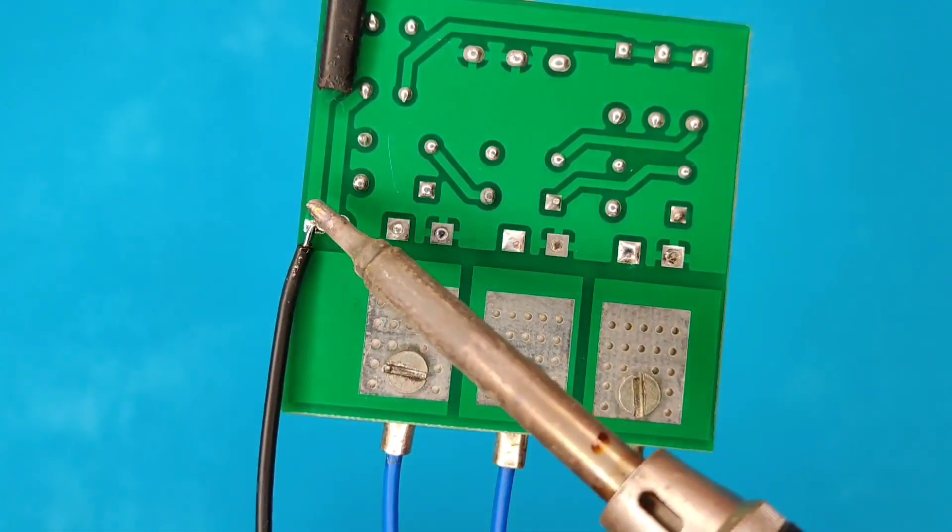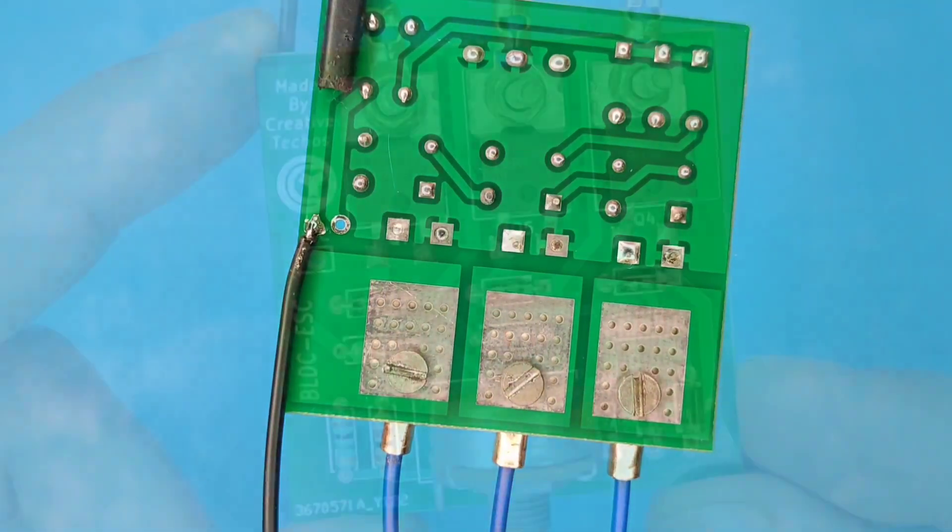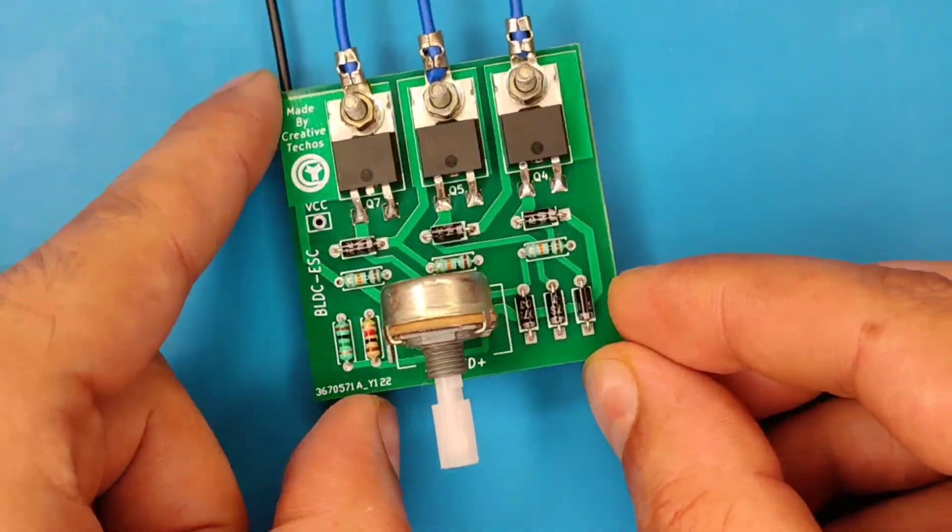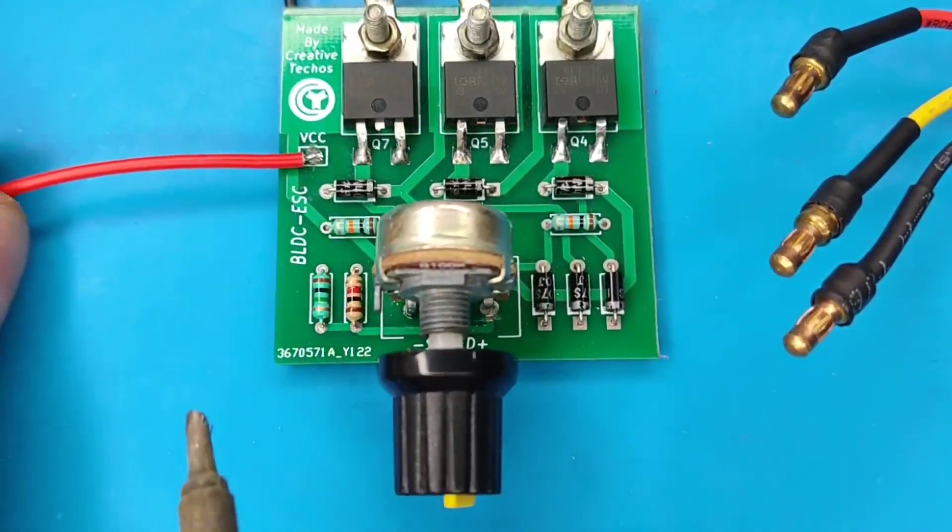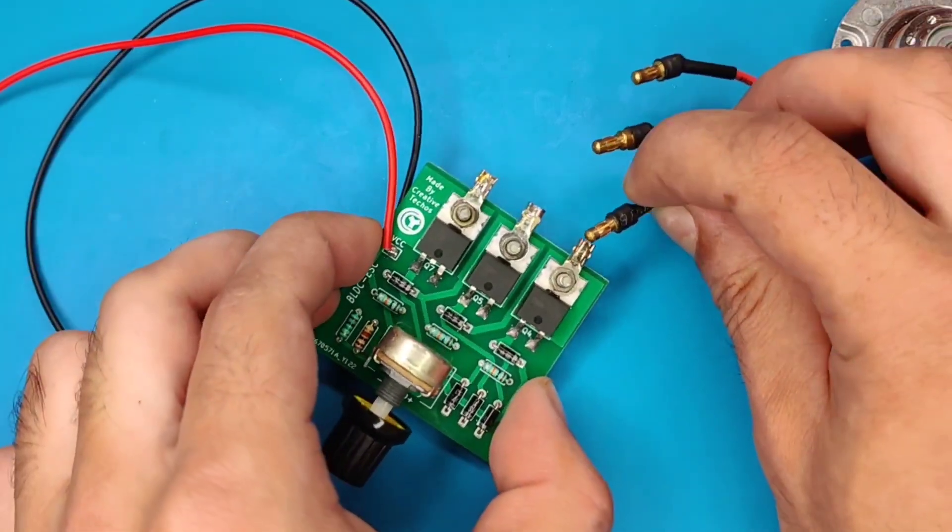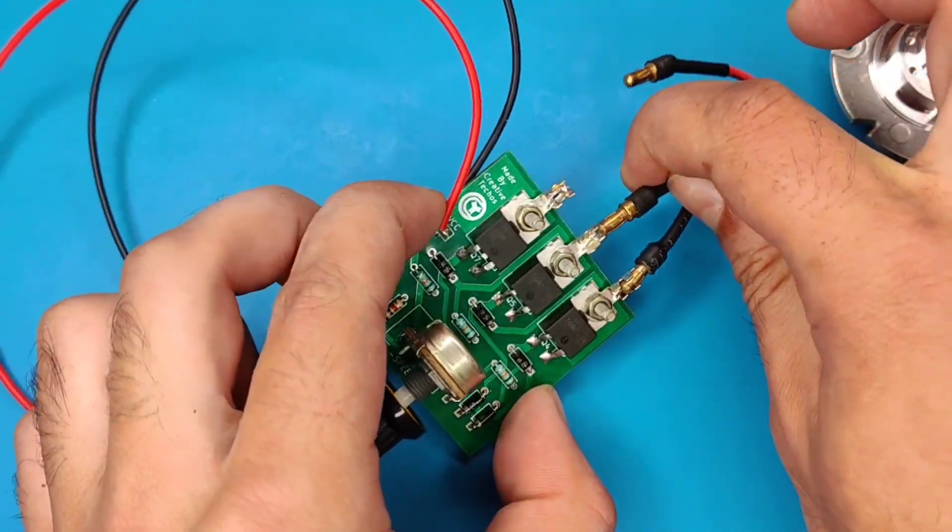Connect negative wire with ground of PCB and connect positive wire with VCC pad. Now connect motor with the thimbles that are connected with MOSFETs.